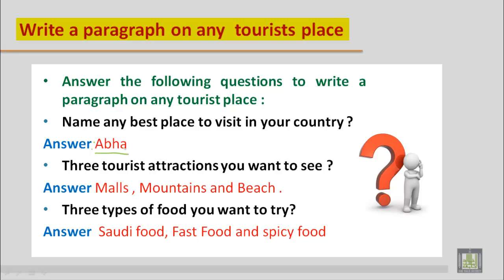The next question you can make is: name three tourist attractions you want to see. Three famous things you want to see in any place. You can say malls, mountains, and beach.